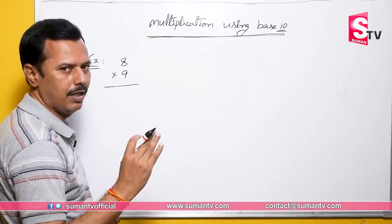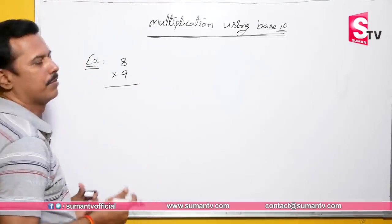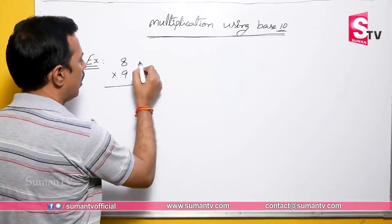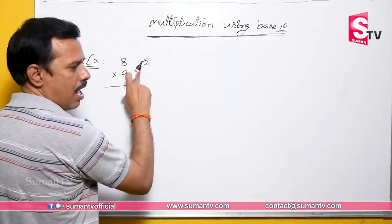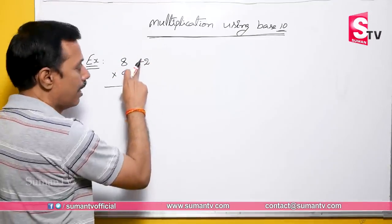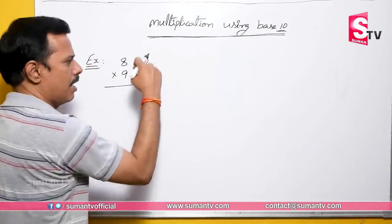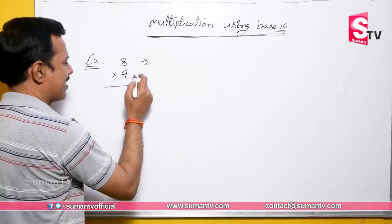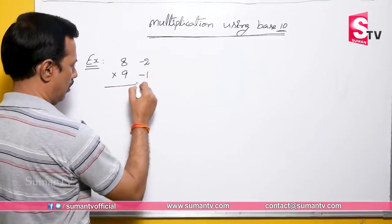In the last video we had values more than 10. Now we have values less than 10. So what is less than 8? Minus 2. And what is less than 9? Less than 10 — it's 1.